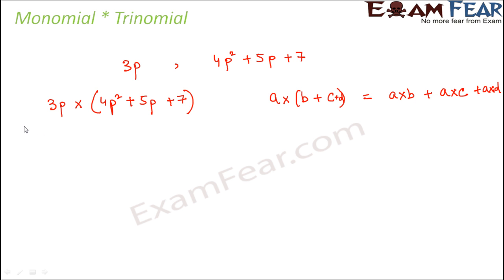So that is the only difference. So in this case, this 3p is like a, 4p² is like b, 5p is like c, and 7 is like d. So this becomes 3p into 4p² plus 3p into 5p plus 3p into 7.